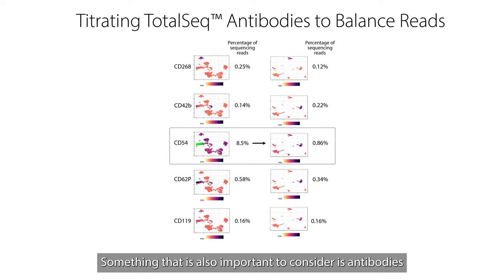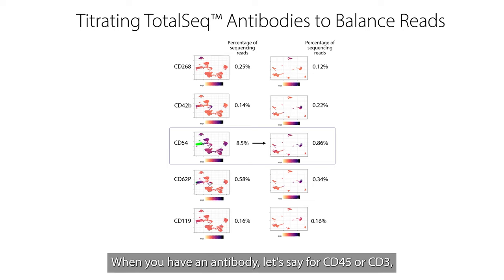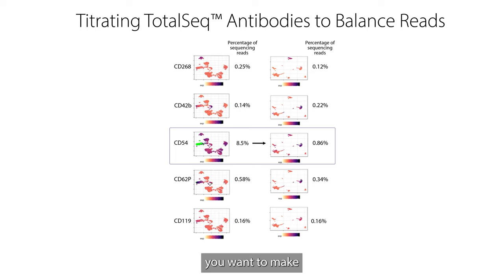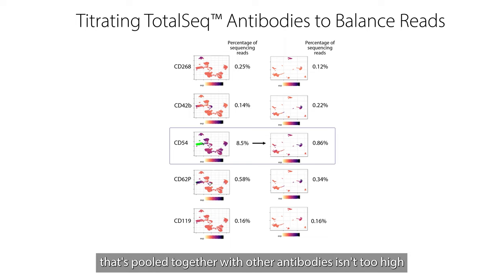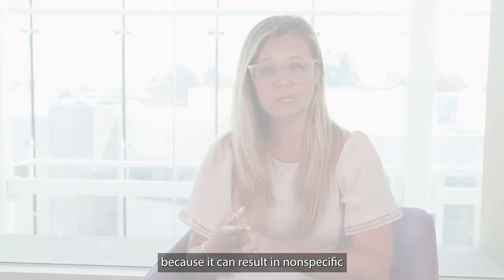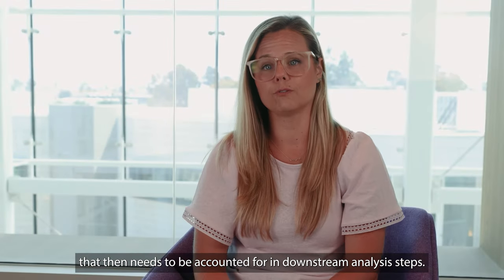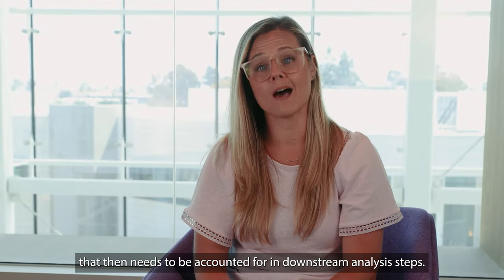That's our main consideration for single cell applications. When you titrate an antibody, something that is also important to consider is antibodies that are at too high a concentration. For example, for a CD45 or a CD3, you want to make sure that the amount of antibody pooled together with other antibodies isn't too high, because it could result in non-specific binding or high background that then needs to be accounted for in downstream analysis.